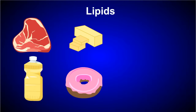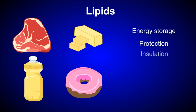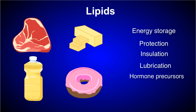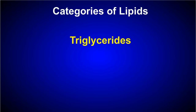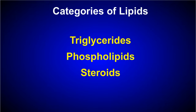Lipids are a group of hydrophobic biomolecules that play important roles in living organisms. While the primary function of lipids is long-term energy storage, lipids are also used for protection, insulation, and lubrication. They also act as precursors for some hormones and are a key component of cell membranes. There are four basic groups of lipids: triglycerides, phospholipids, steroids, and waxes.